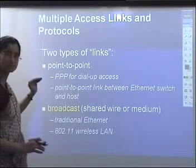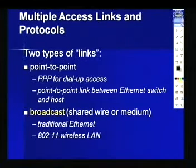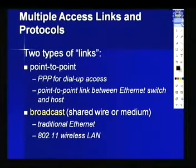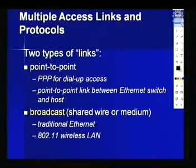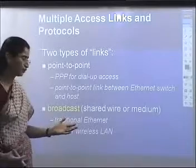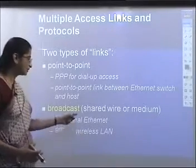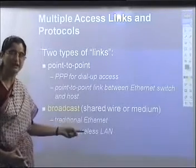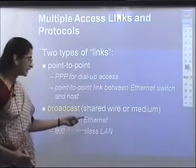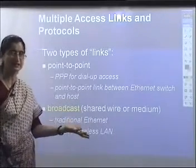The access problem arises only when we have a broadcast link — a shared wire or medium with multiple nodes. Two common examples you use every day are traditional Ethernet and 802.11 wireless LAN. In Ethernet, the same wire is shared by multiple nodes to transmit data; in wireless LAN, the wireless medium itself is shared.